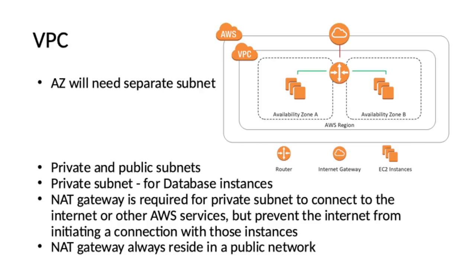VPC is a broad topic that you need to invest serious time to understand. As a recap, a few important things to note: each availability zone needs separate subnets — two different availability zones cannot reside in one subnet. You need to understand the concept of public and private subnets, and there will definitely be questions based on this. Remember: databases will always be in a private subnet, and a NAT gateway is used for the private subnet to connect to the internet or other AWS services, but it prevents the internet from initiating a connection with those instances in the private subnet.